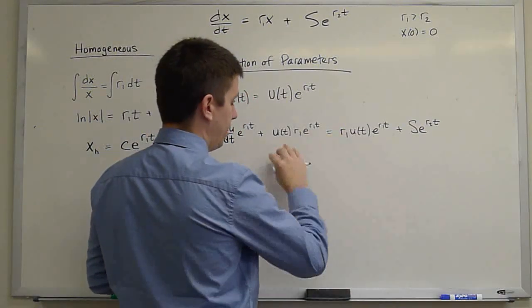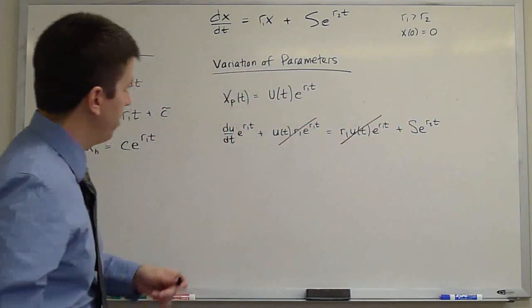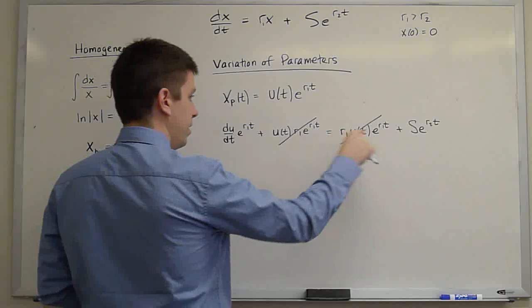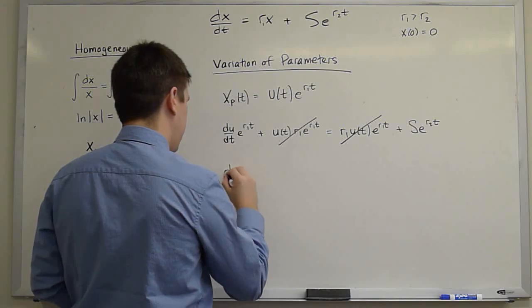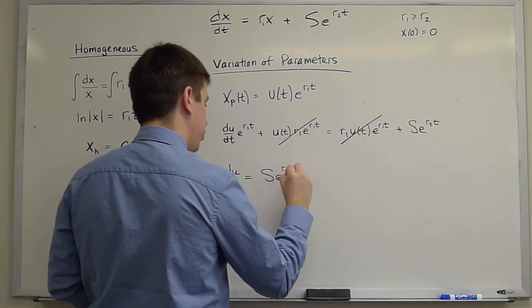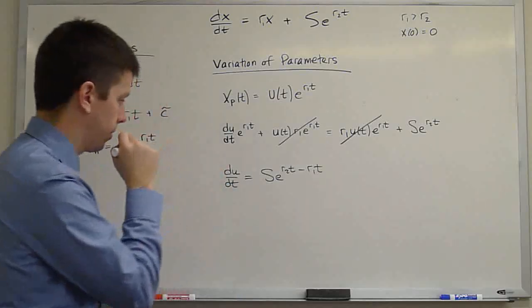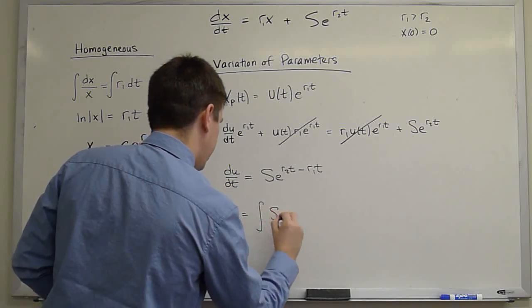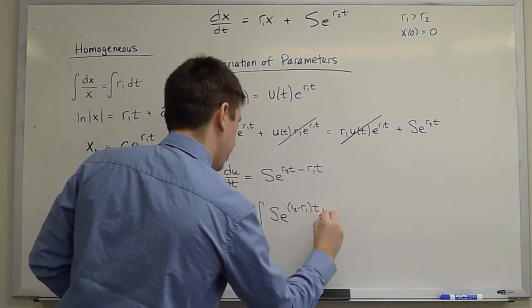In any case, you cancel, as expected from variation of parameters. And we can solve for u. du/dt is s*e^(r2*t) divided by e^(r1*t), which is e^((r2-r1)*t). And so u is the integral of s*e^((r2-r1)*t) dt.